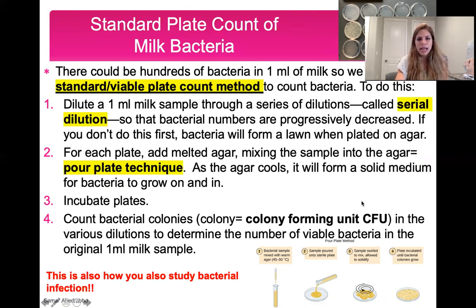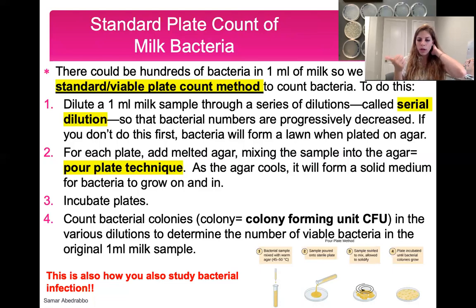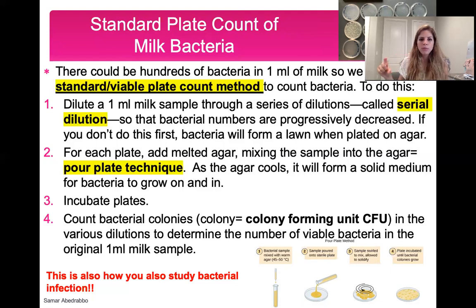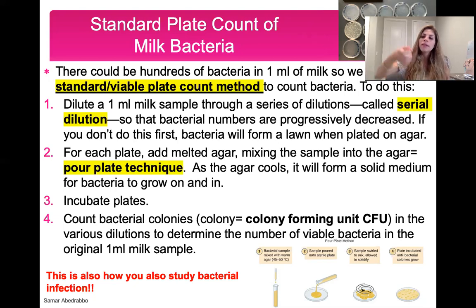To summarize the method: we take one milliliter of each milk sample — raw milk, pasteurized milk, and fermented milk — and do a series of dilutions called a serial dilution. We're progressively decreasing the amount of bacteria so that we can count them on an agar plate. You take your milk, dilute it multiple times, and then mix those dilutions with agar, swirl it a little, pour the agar onto a petri dish — the little circular dishes — let it cool, and incubate it.